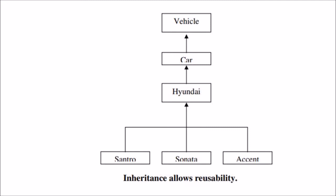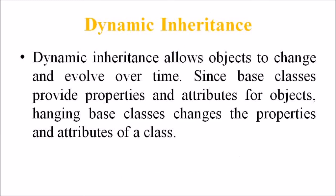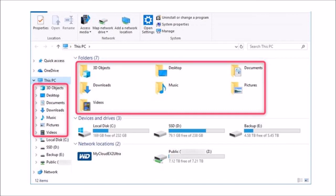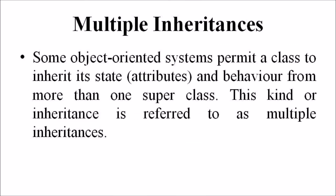In the property of inheritance, we can see dynamic inheritance as well as multiple inheritance. In dynamic inheritance, it allows the object to change and evolve over time. Since the base class provides properties and attributes for objects, changing base classes changes the properties and attributes of a class. For example, a window object changes to an icon and back again — when you double-click a folder, the contents are displayed in a window, and when closed, it changes back to its icon. This involves changing a base class between a window class and icon class. In multiple inheritance, some object-oriented systems permit a class to inherit its attributes and behavior from more than one superclass.